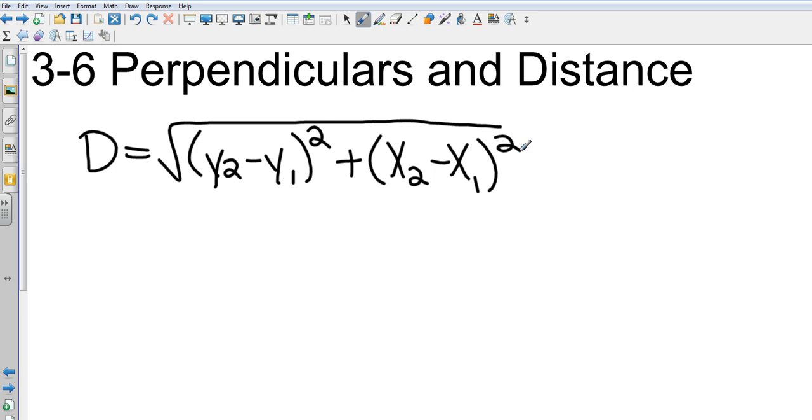Okay, the actual distance formula puts x's in front of y's, but it doesn't make any difference. It's actually x2 minus x1 squared plus y2 minus y1 squared, but it doesn't make any difference. Why do we square things inside of a square root? Because distance can only be positive. Distance can only be positive.